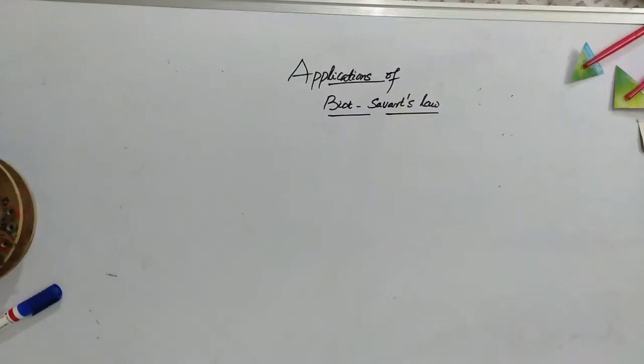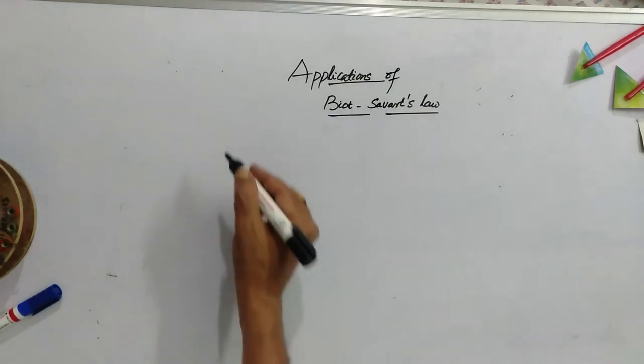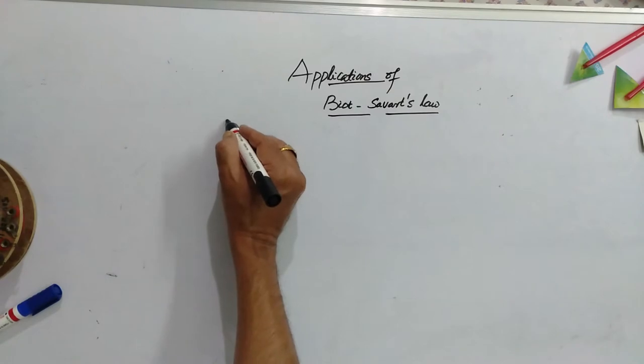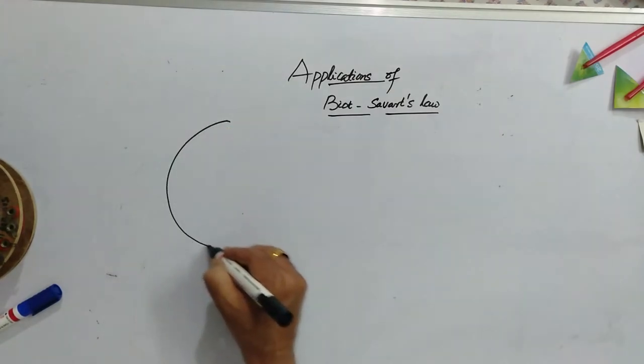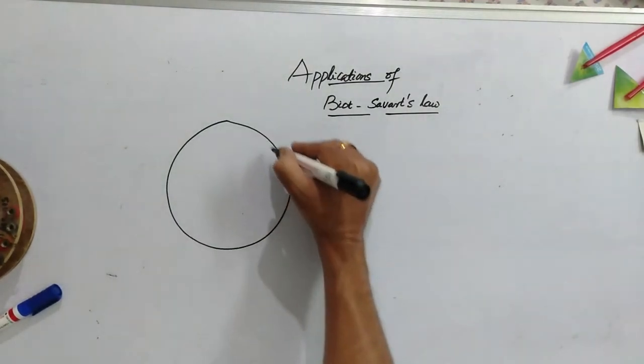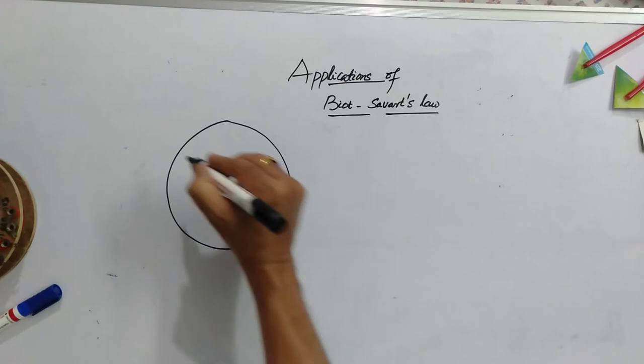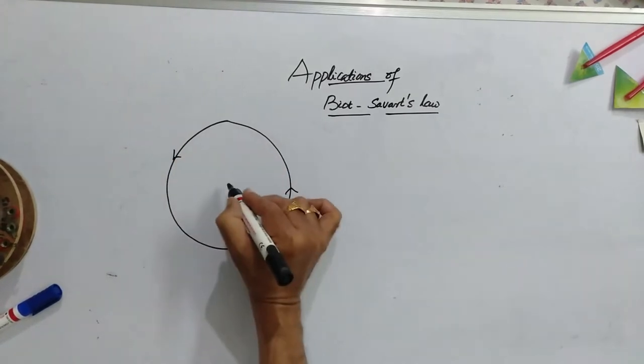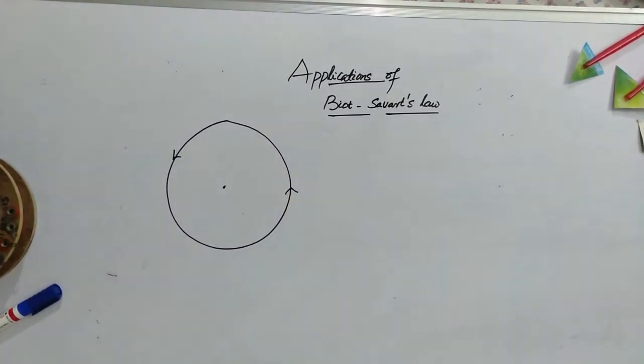Now, let's talk about the applications of Biot and Savart's law. The first application, suppose if a circular coil is there and current is passing through it, then what should be the magnetic field at its center?